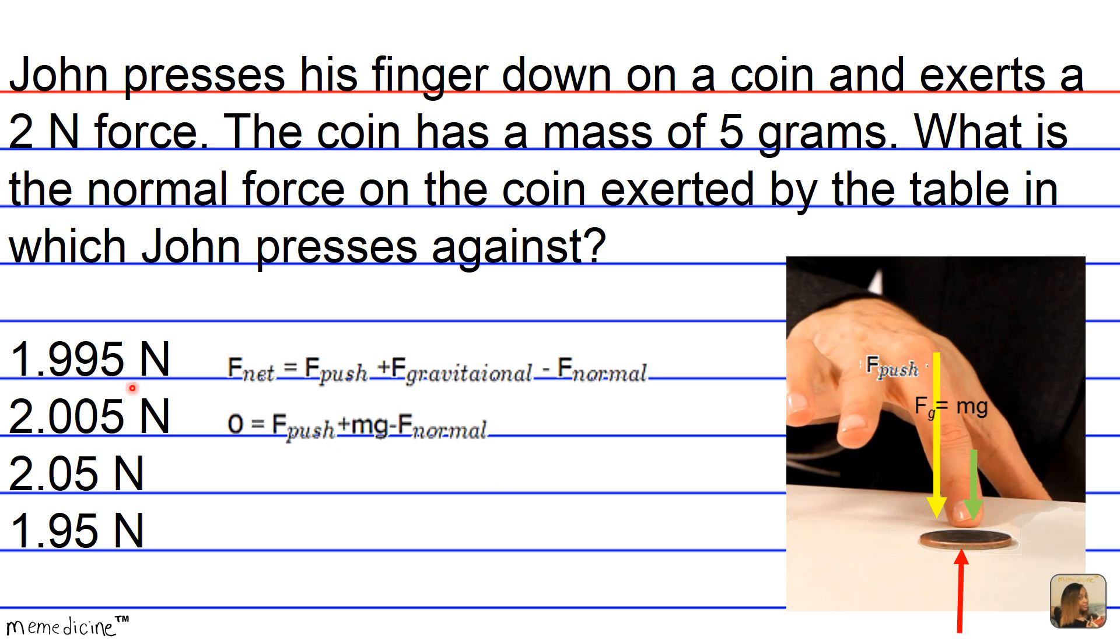So the net force, zero newtons, is equivalent to F push plus F gravitational, which is pictured here as being equivalent to the mass times the acceleration due to gravity minus F normal. Notice that we're assigning the upward direction as negative and the downward direction as positive.